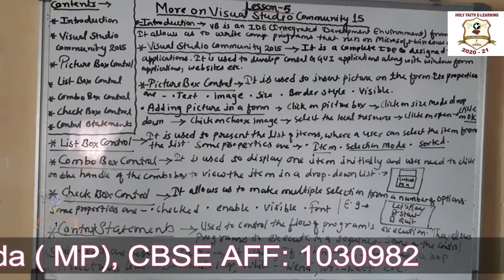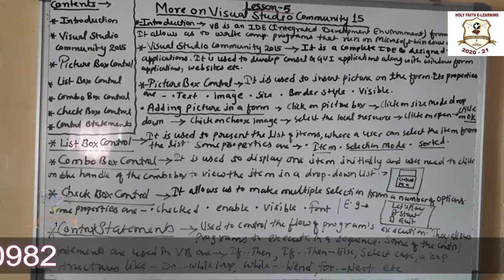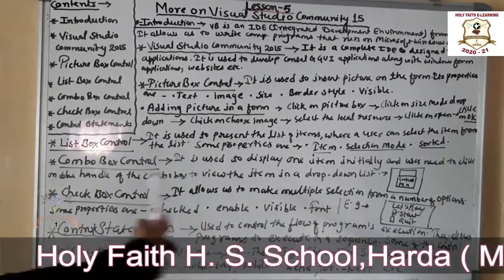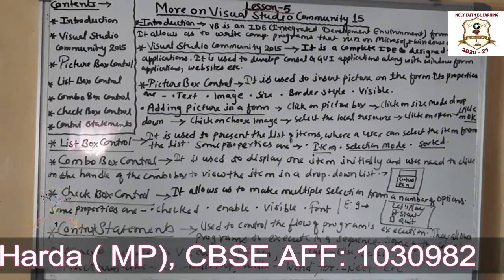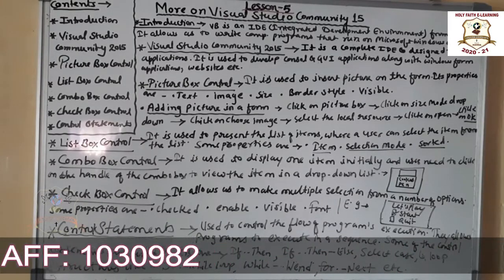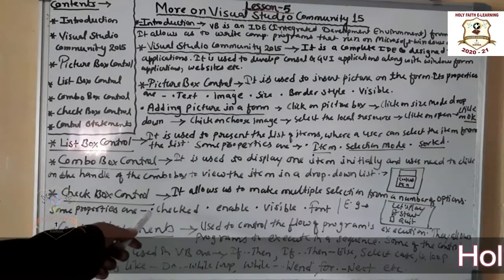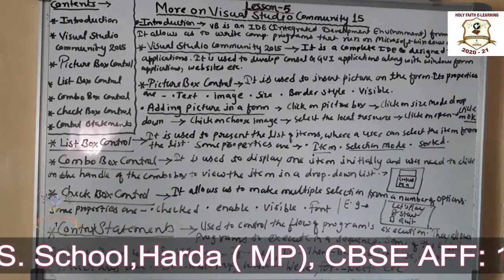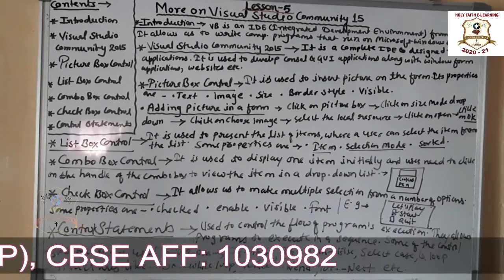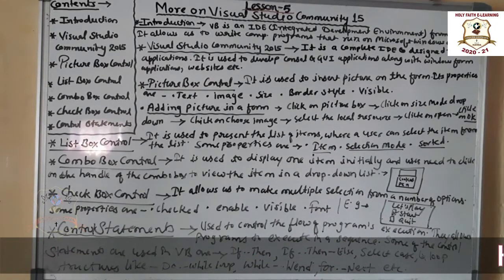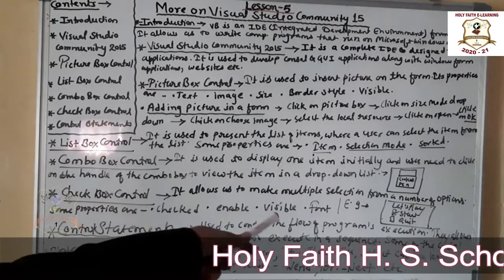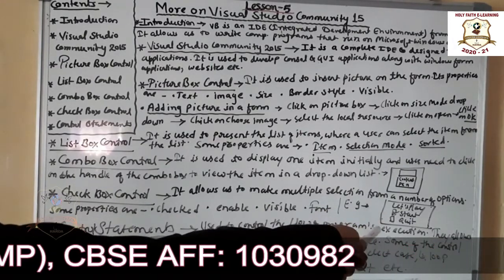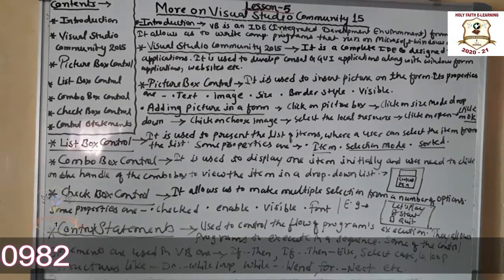The Check Box control allows users to make multiple selections from a number of available options. Key properties include: Checked — indicates whether the check box is checked or not; Enabled — a true or false value that determines whether the option is active; Visible — determines whether the object is visible or hidden; and Font — sets the type and size of the font. For example, a form might have two check boxes labeled 'Start' and 'Quit'.